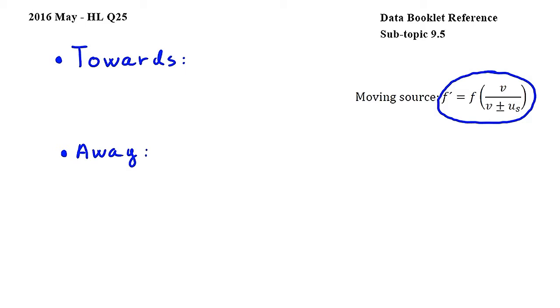Here f dash is the frequency observed by the observer, f is the frequency of the wave emitted by the source, v is the wave speed and us is the speed of the source.